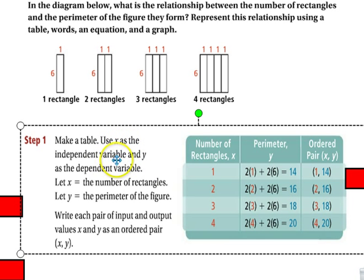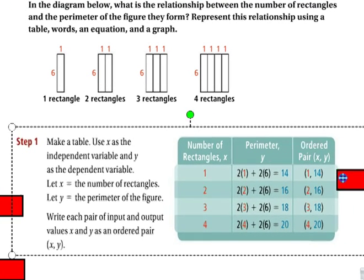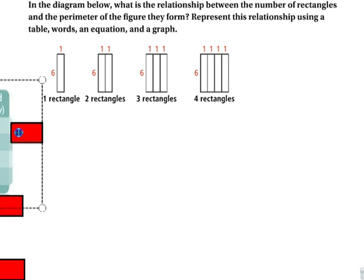X is the independent variable. Y is the dependent. X is the number of rectangles. Y is the perimeter. So the more rectangles, the perimeter changes. So with one rectangle, it has a perimeter of 14. With two, it has a perimeter of 16. With three, it has 18. With four, it has 20. So on and so forth. So that is the table.